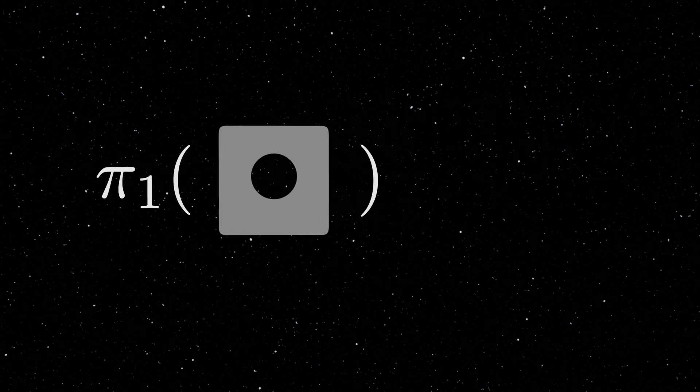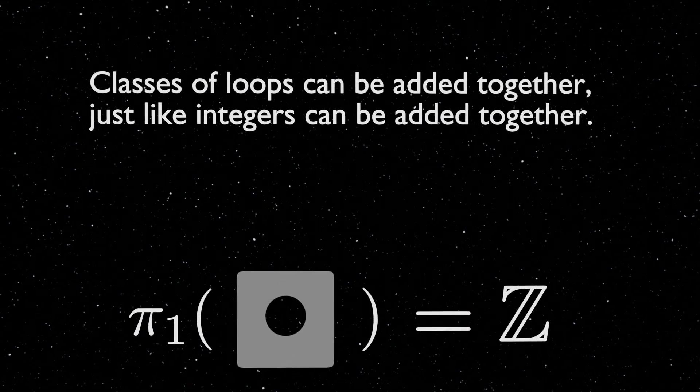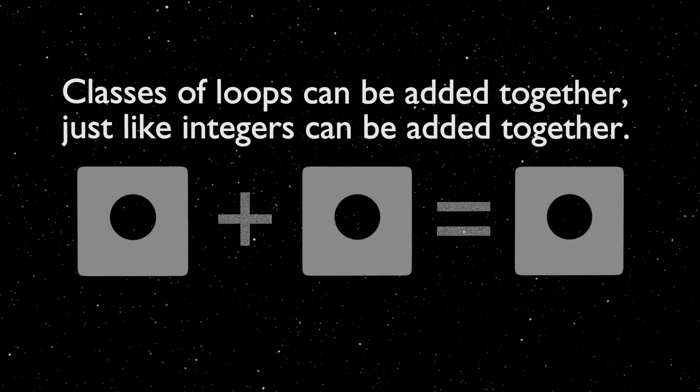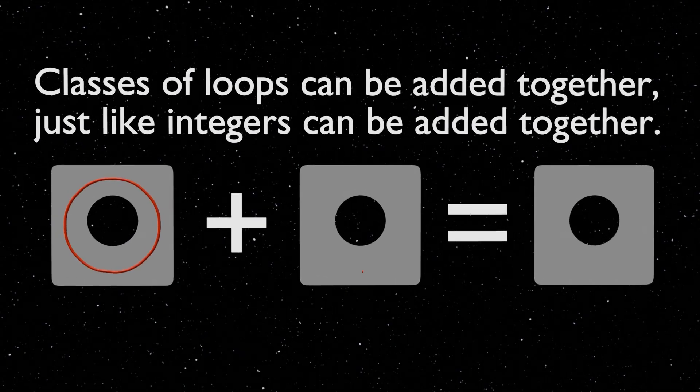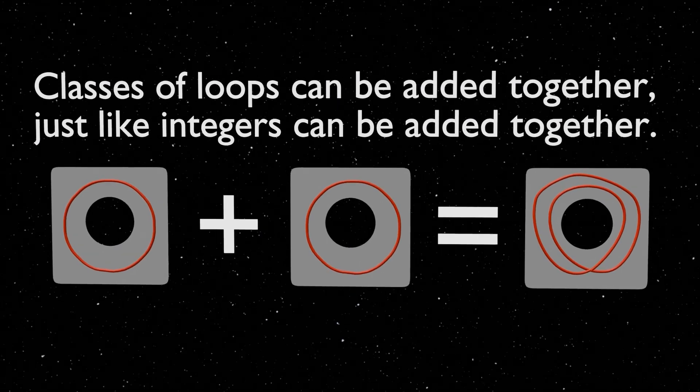In this case, the fundamental group of the punctured plane looks like the integers. Every loop can be assigned a value based on how many times it travels around the puncture, with traveling in the clockwise direction being positive and traveling in the counterclockwise direction being negative.